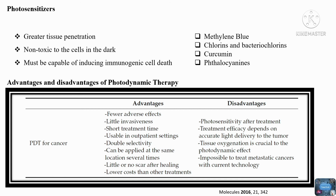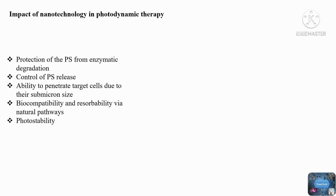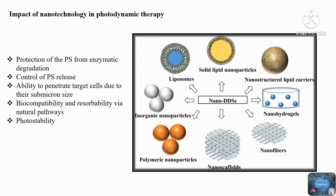Nanotechnology-based photosensitizer delivery is a novel approach to improving the outcome of cancer photodynamic therapy. Nanoparticles, with a size range of 1 to 100 nanometers, have a number of advantages as a photosensitizer delivery system, including protection of the photosensitizer from enzymatic degradation, control of photosensitizer release allowing for constant and uniform concentration into target cells, ability to penetrate target cells due to their submicron size, biocompatibility and resorbability via natural pathways, and photostability. Different nanoparticles used as carriers for photodynamic therapy include polymeric nanoparticles, solid lipid nanoparticles, nanostructured lipid carriers, and metallic nanoparticles.